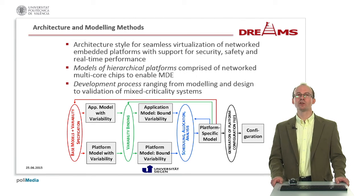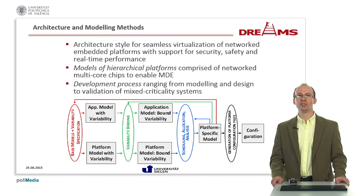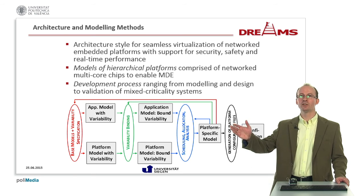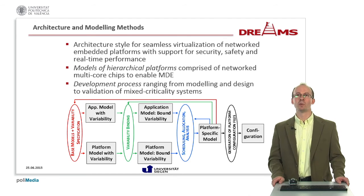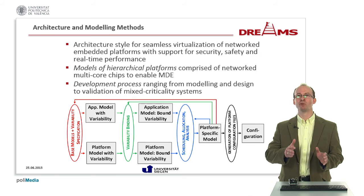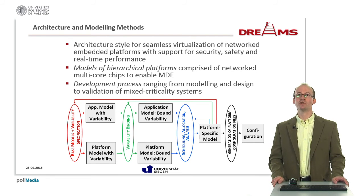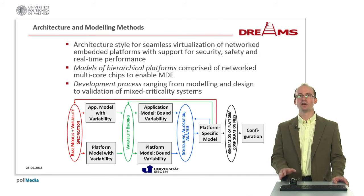One key building block is the architectural and modeling methods. We have an architectural style reflected in formal models describing both applications and platforms. Starting on the left-hand side, we have application models and platform models that include variability — generic components with parameters that can be fixed in a later stage. For example, an application component may exist in different variants: a very reliable version with high resource requirements and a variant with reduced resource consumption. As part of variability binding, these parameters are fixed.